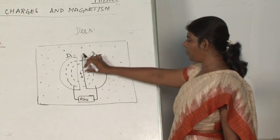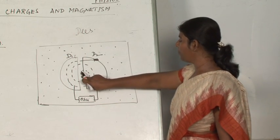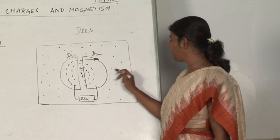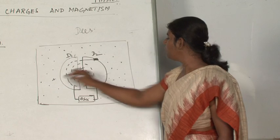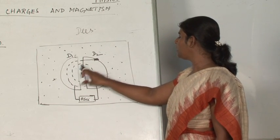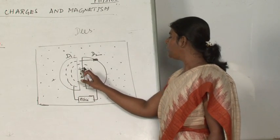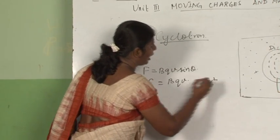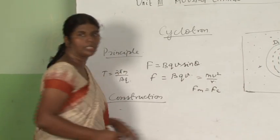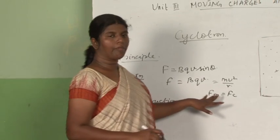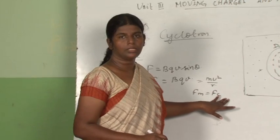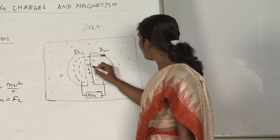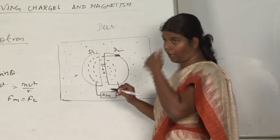Now what happens? We place the charged particle at the source at the centre. When D2 is negative and D1 is positive, the positive charged particle is attracted towards D2 and moves in a circular path. The magnetic force BQV equals MV squared by R, meaning the magnetic force equals the centripetal force. The particle starts moving in a circular path.